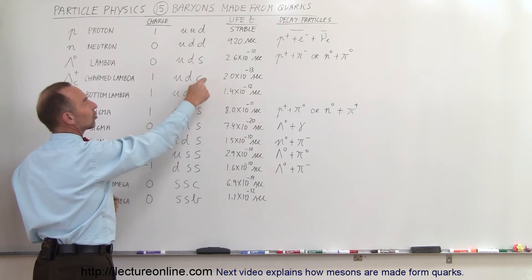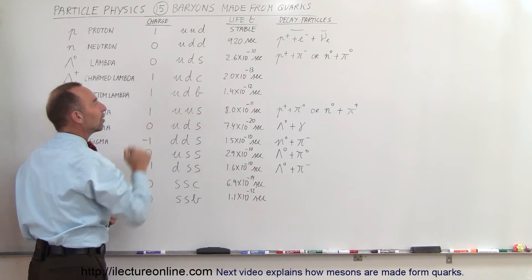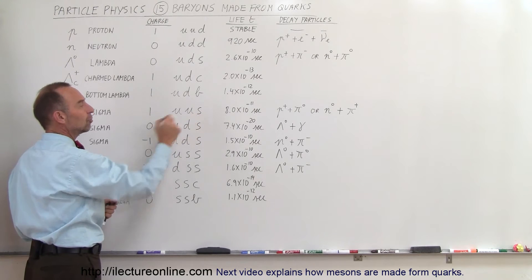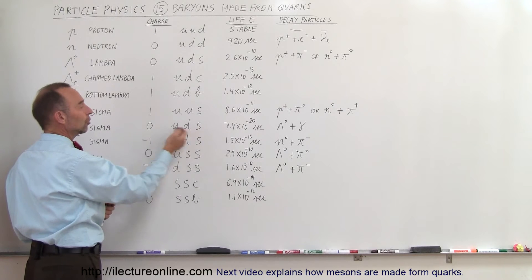And a bottom quark has the same charge as a charm quark, so again, bottom is plus two-thirds, up is plus two-thirds, down is minus one-third. The two up quarks, both are plus two-thirds, strange is minus one-third, and here, plus two-thirds, both of these are minus one-third, so they're neutral.